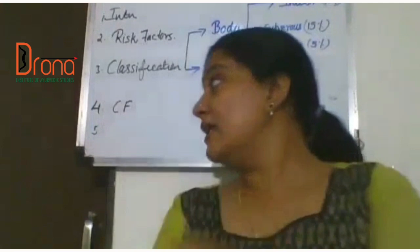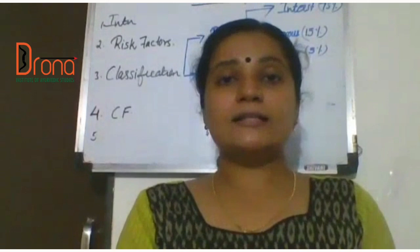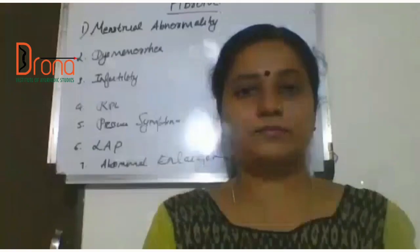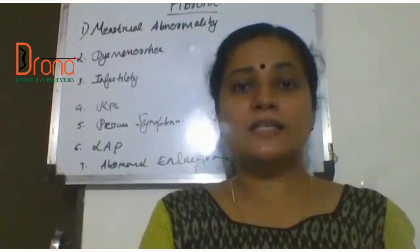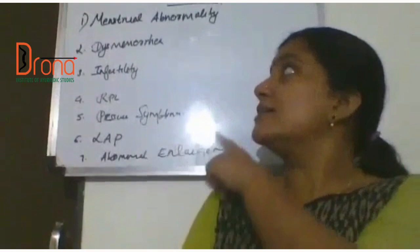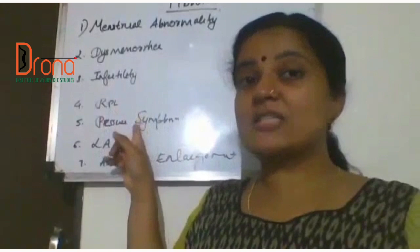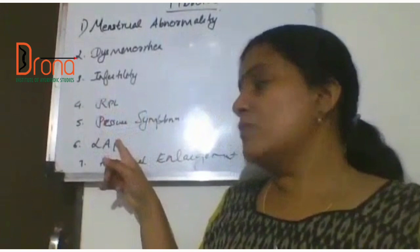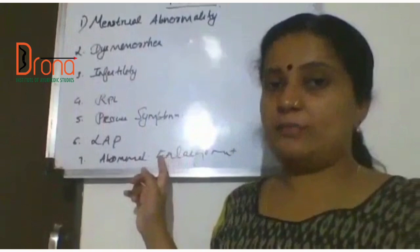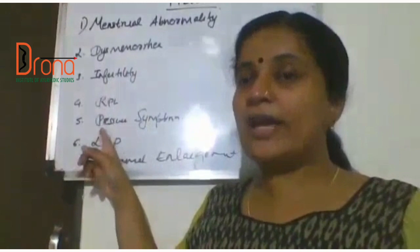Coming to the clinical features of fibroid — the main clinical features are menstrual abnormalities, dysmenorrhea, fibroid can lead to infertility, there are pressure symptoms, it can lead to recurrent pregnancy loss, lower abdominal pain, and abdominal enlargement. These are the important clinical features seen in fibroid.